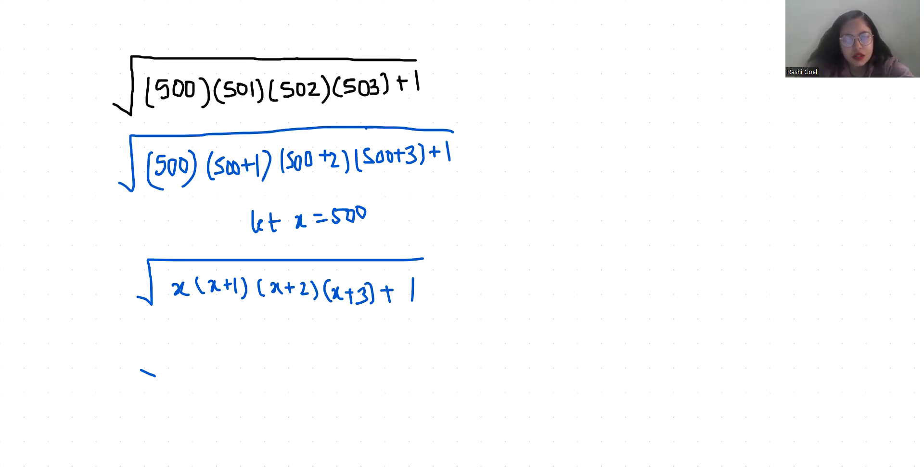So x times this bracket gives us x squared plus 2x plus x, 3x plus 2 times 1, 2, and this is x plus 3 plus 1.